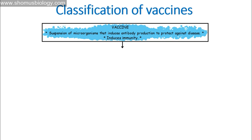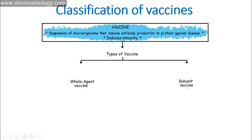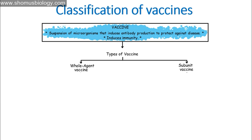We now have almost five or six different types of vaccination strategies. Not all of them work the same way — they have different principles and work for different diseases. We can divide vaccines into two types: whole agent vaccines, where we take the whole microorganism, or subunit vaccines, where we take just a fragment or subunit of that microorganism.